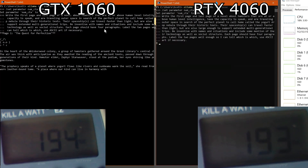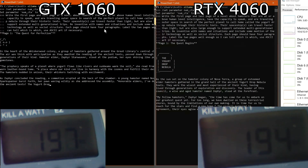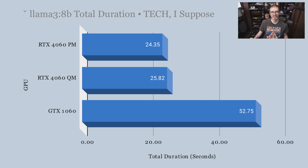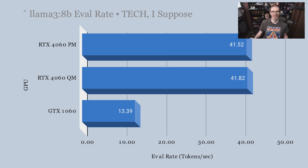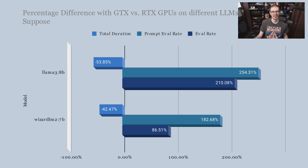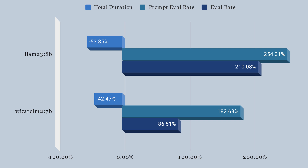Also tested Meta's Llama 3 8B — 8 billion parameters, making it a larger model. Again, looking at total duration where lower is better, the 4060 is significantly faster. The same advantage appears in prompt eval rate and standard eval rate. Comparing both models, the Llama 3 8B shows a larger performance gap between the two GPUs, possibly because the larger number of parameters benefits from the greater VRAM on the card — though it could also be compute-related.